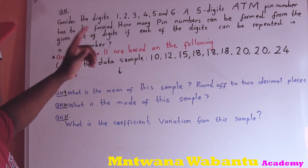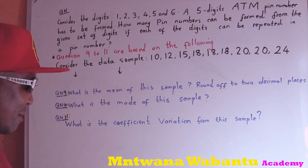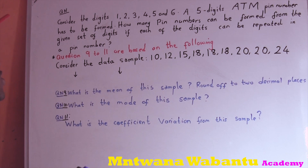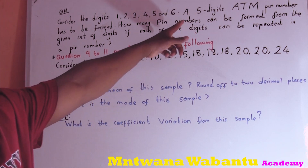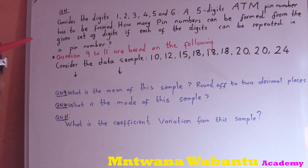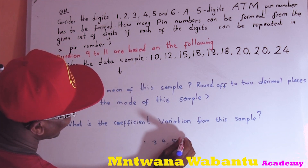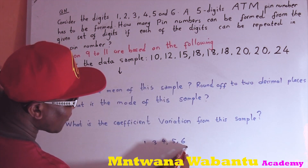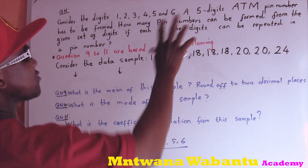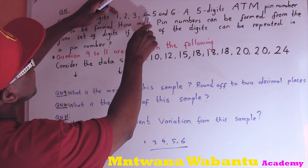I don't want to waste any time. Consider the digits we have: 1, 2, 3, 4, 5, and 6 — a five-digit ATM pin. So you go to the ATM and you have to put only five digits. Your pin is going to have a five-digit number. Now, the digits available are 1, 2, 3, 4, 5, and 6, but your ATM pin only needs five digits. So you have to pick five — you have to select from 1 to 6, meaning one digit has to be left out. For example, you might say 1, 2, 4, 5, 6.